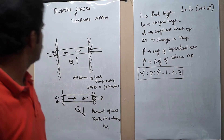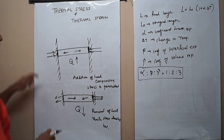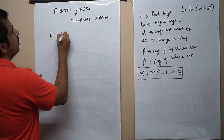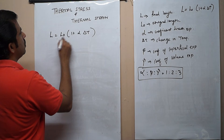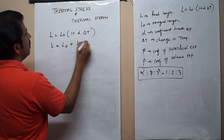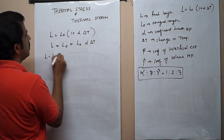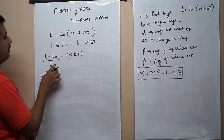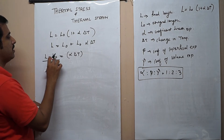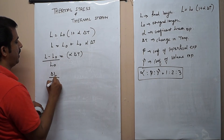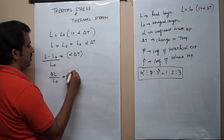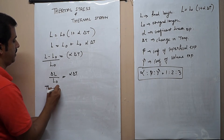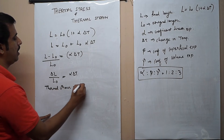Now we will find an expression for thermal stress and thermal strain. We already have the equation L = L₀(1 + α·ΔT). Expanding: L = L₀ + L₀·α·ΔT, so L - L₀ = L₀·α·ΔT, and therefore ΔL/L₀ = α·ΔT. This is known as the thermal strain, which is equal to α·ΔT.